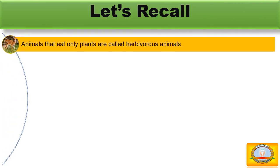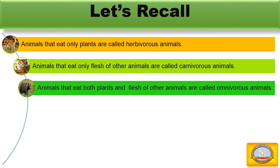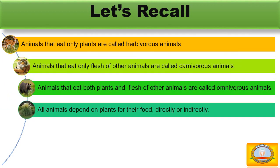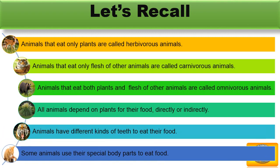Let's recall. Animals that eat only plants are called herbivorous animals. Animals that eat only the flesh of other animals are called carnivorous animals. Animals that eat both plants and the flesh of other animals are called omnivorous animals. All animals depend on plants for their food directly or indirectly. Animals have different kinds of teeth to eat their food. Some animals use their special body parts to eat food.